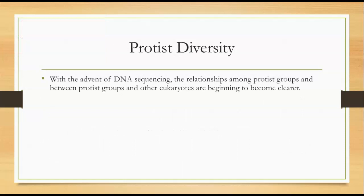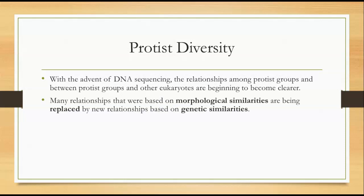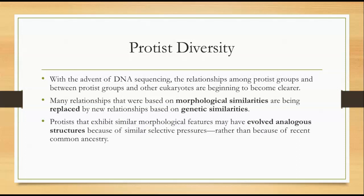With the advent of DNA sequencing — where we can literally read the A's, G's, T's, and C's in the DNA code — the relationships among protist groups and between protist groups and other eukaryotes are becoming clearer. Many relationships that were based on morphological similarities, basically what they look like, are now being replaced by new relationships based on genetic similarities. Because they could look alike but genetically be very dissimilar, it's always better to look at the genetics.